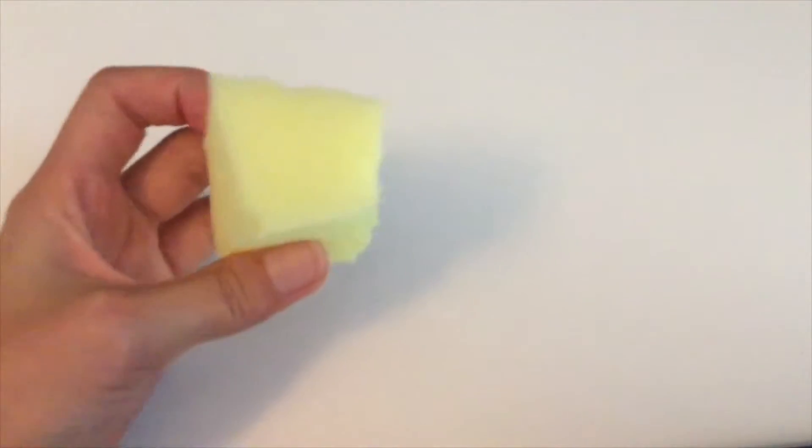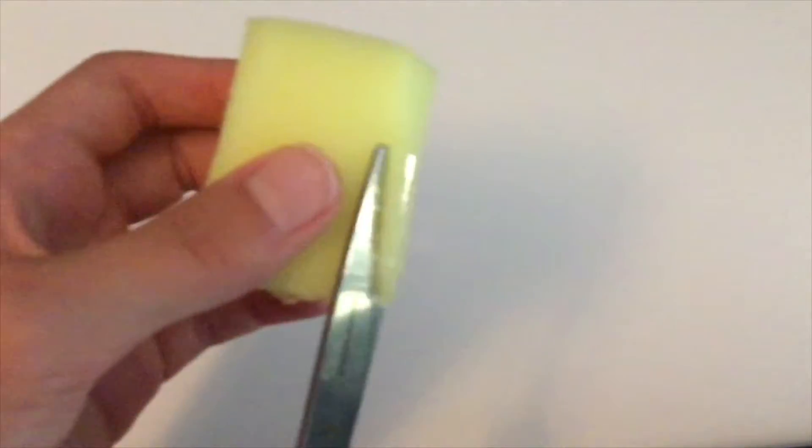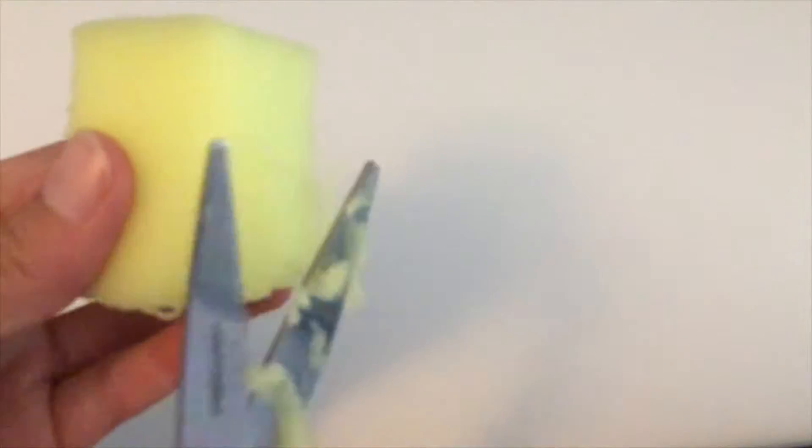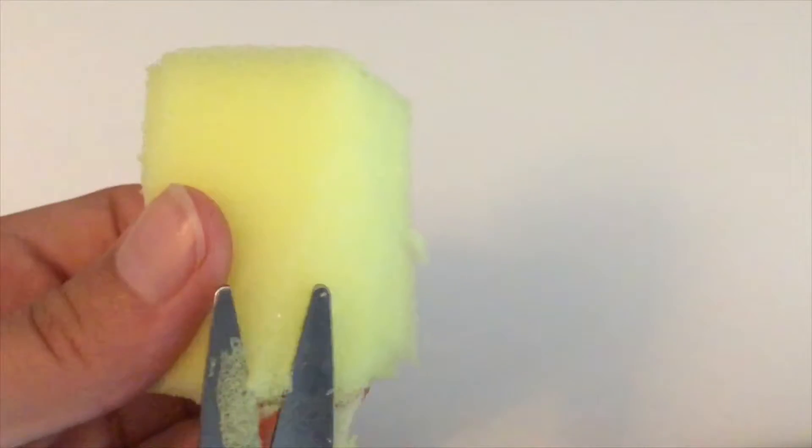Today we're just going to jump right into it. You want to first start off with taking your scissors and cutting off the edges and making them smooth to make almost a cylinder shape.